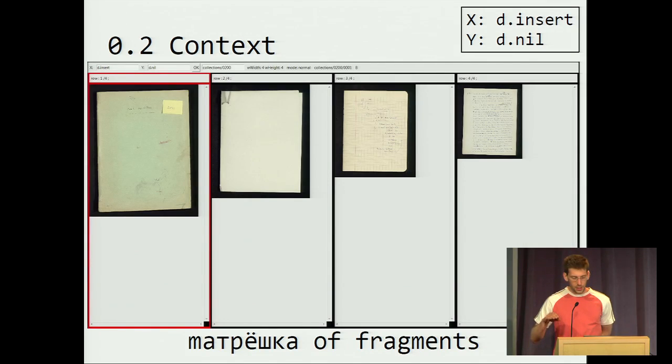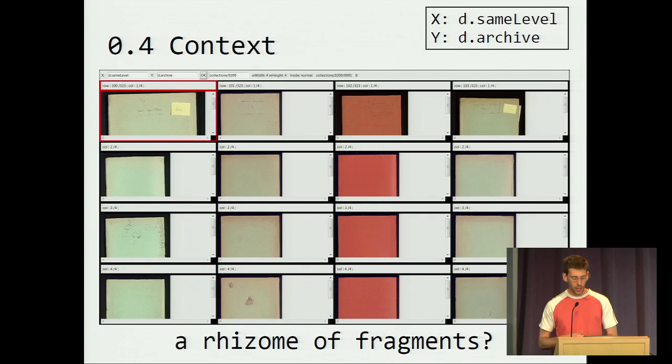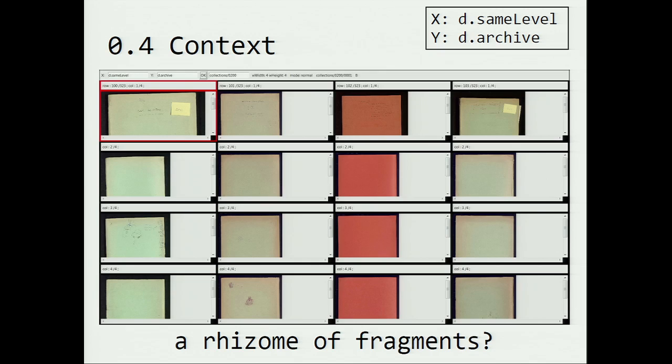Then, if I map the insert dimension to the X dimension of the screen, I can see something like that, which means that inside this fragment is contained this fragment, and inside this fragment we can find this fragment. Then, if I also map to the Y dimension the same level dimension, I can see that at the same level as this collection, we have this collection, and at the same level as this collection, etc.